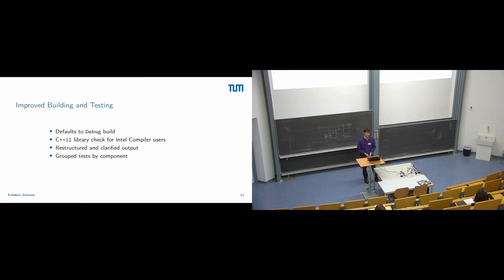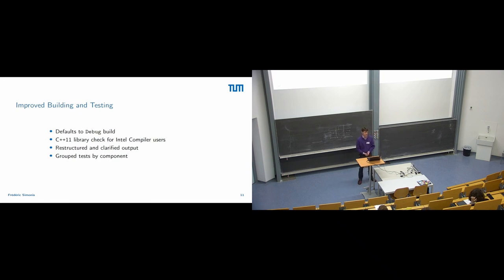We improved building and testing. We got a lot of negative comments about following CMake standards, as building preCICE from source could result in strange configurations — non-optimized, non-debug — which is a nightmare for teaching. We fixed this: we now use debug as a default, which is a small but important step. For users of Intel compilers, we added C++11 library checks, since Intel detects your GCC library at runtime, making it painful to ensure you are using a C++11-compliant standard library.